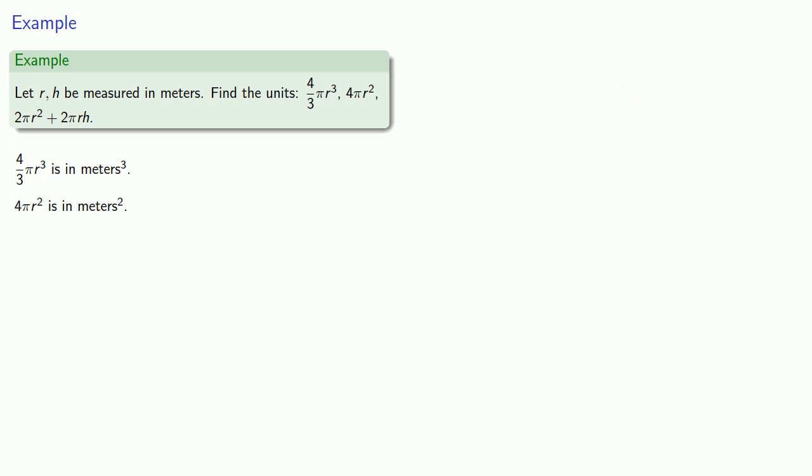And finally, 2 pi r squared plus 2 pi r h. Again, 2 and pi are pure numbers, and they have no units. So this expression will have the same units as r squared plus r h. And r squared is going to be in meters squared. And r h is going to be in meters times meters, also in meters squared. And if you think about this, this expression is sort of like x squared plus x squared, and that will give you 2x squared, except 2 is a pure number and doesn't have a unit, so we can ignore it. r squared plus r h will also be in meters squared, and so will our original expression.